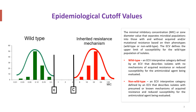The epidemiological cutoff divides MIC populations into either wild type — with no resistance mechanism — and non-wild type, with acquired resistance mechanisms. Wild type is defined by ECOFF values as isolates with no resistance mechanism or reduced susceptibility, while non-wild type isolates have an acquired mechanism of resistance.